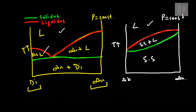In the eutectic system, we see there are two fields in which a liquid and a solid can coexist together, while in the solid solution series, there is only one field in which solid and liquid can coexist. Below the solidus in the eutectic system, two phases are stable — one of diopside and one of anorthite — and hence it is a two-phase field.